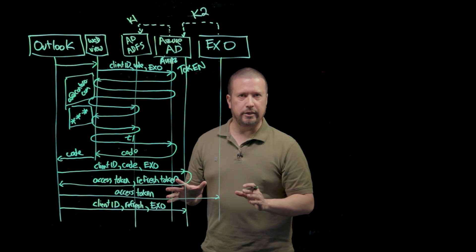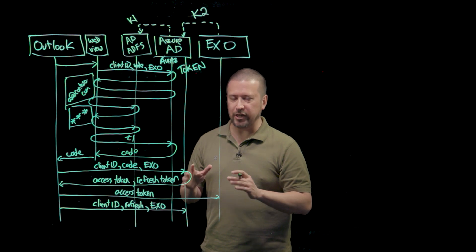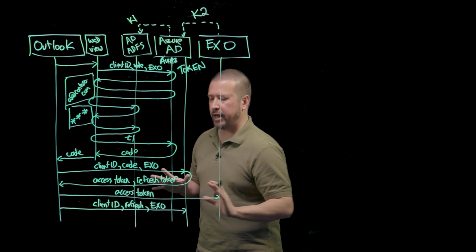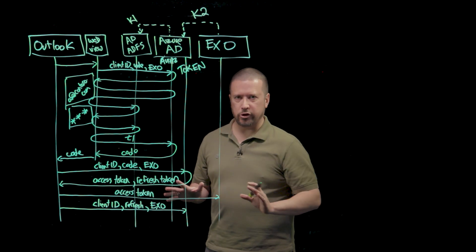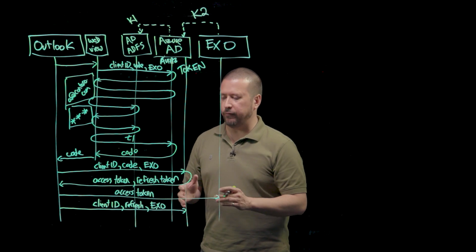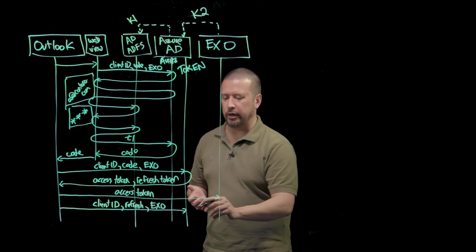If Azure Active Directory decides that the user needs to do a new interactive authentication, then it will send back an error and say the refresh token is expired. But if everything else checks out and the refresh token is still good, then Azure Active Directory will simply respond back with a new access token.